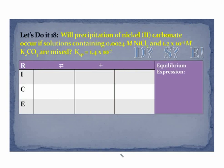Now I want to ask you another kind of question that I think is very important: will precipitation occur? So this time you are given two soluble salts and you are asked about an insoluble salt. It's asking about precipitation of nickel(II) carbonate. It's giving you a Ksp.